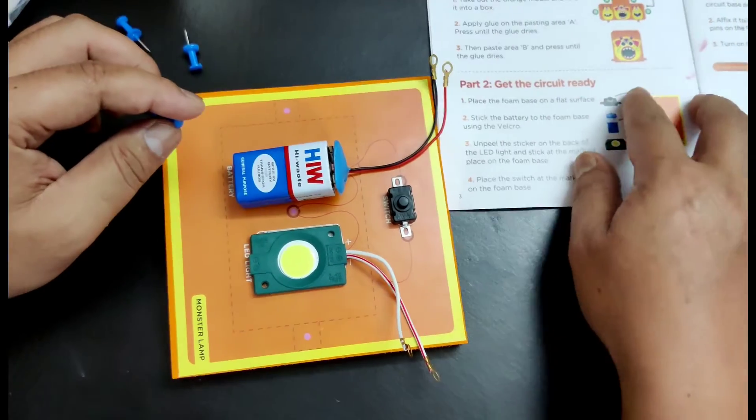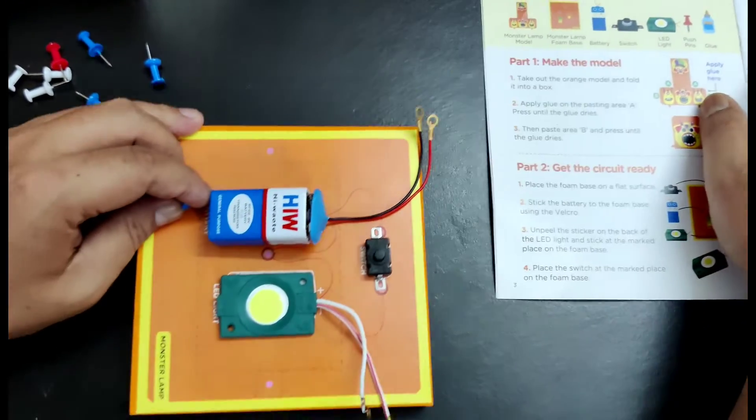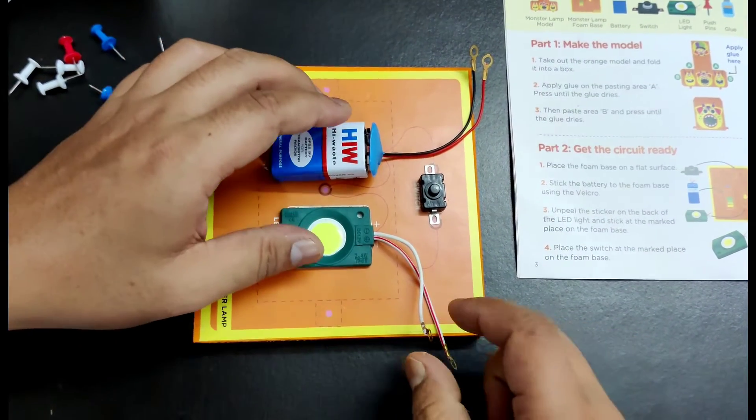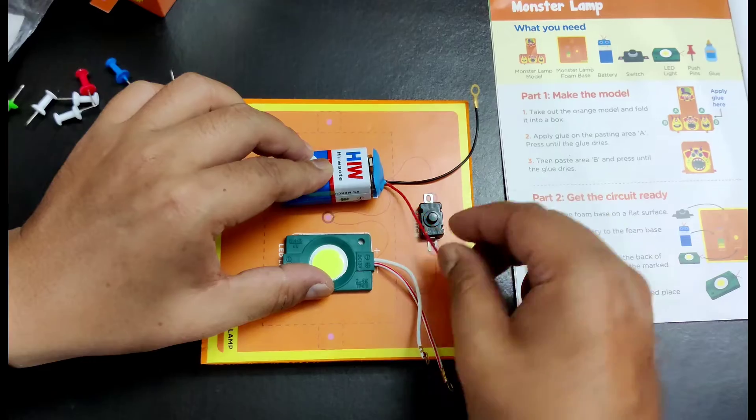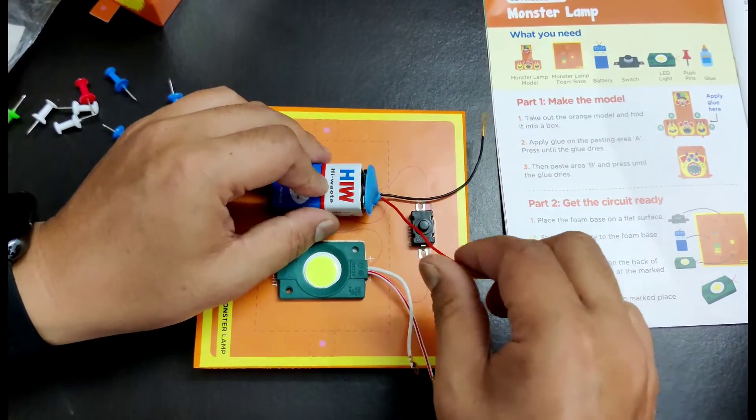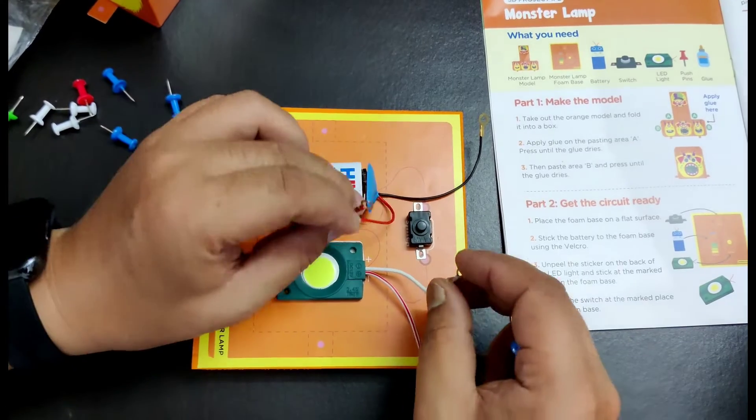All right, so first what it says... let's say over here it says connect the positive wire of the battery to the positive wire of the LED. So here is the positive wire of the battery and it will be connected to the positive wire of the LED.